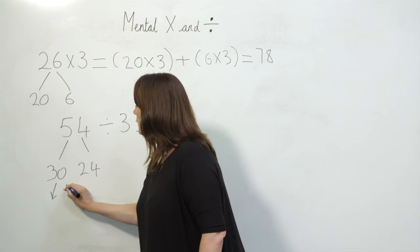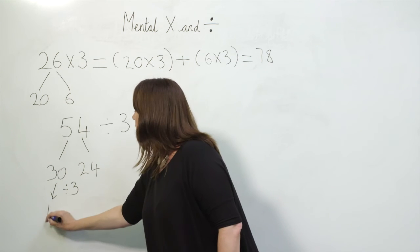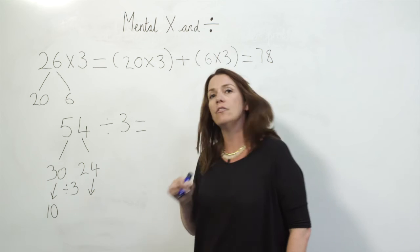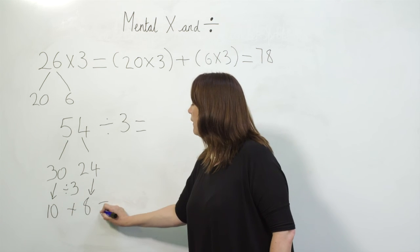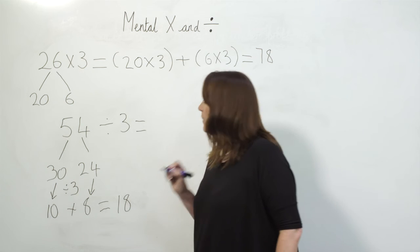So 30 divided by 3 is 10, and 24 divided by 3 is 8, and I can add them together to give me 18.